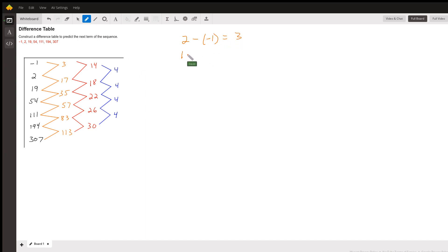19 minus 2 gives us 17, and so on. So 54 minus 19 is 35, 111 minus 54 is 57, and so on until we've found all the differences.